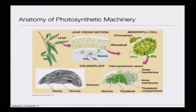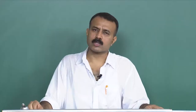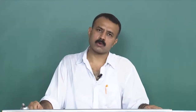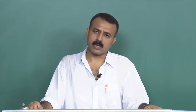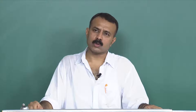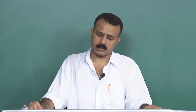Just by looking at this self-assembly, you will be able to appreciate how wonderfully this self-assembly has been made. It is on those thylakoid membranes that the actual molecular assembly or the molecular machinery of photosynthesis is housed, which is playing a critical role in the energy transfer process.